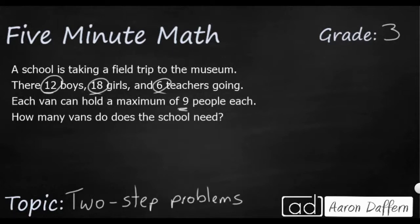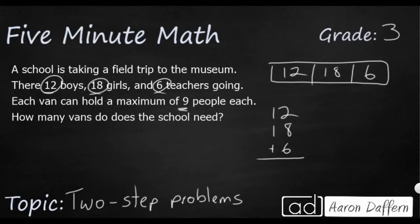So we're actually going to have to add this first. If we were to draw a little strip diagram right here, if we were to take our 12, our 18, and then our 6, we've got to add that up to see how much that is. So that's going to be 12, 18, and 6. So that's going to be 10, 16, 1, 2, 3. So that's 36. So I've got 36 people, and each van can hold a maximum of nine.